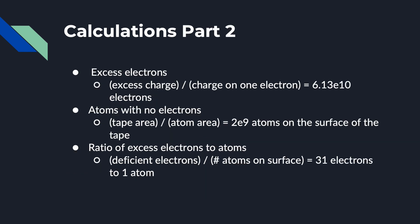For part 2 of calculations, we first determine the number of excess electrons by dividing the excess charge by the charge of one electron, which yields 6.13 times 10 to the 10 electrons. We then determine the number of atoms missing electrons — giving the overall positive charge — by dividing tape area by atom area, yielding 2 times 10 to the 9 atoms on the surface of the tape. The ratio of excess electrons to atoms ended up being 31 electrons per one atom.